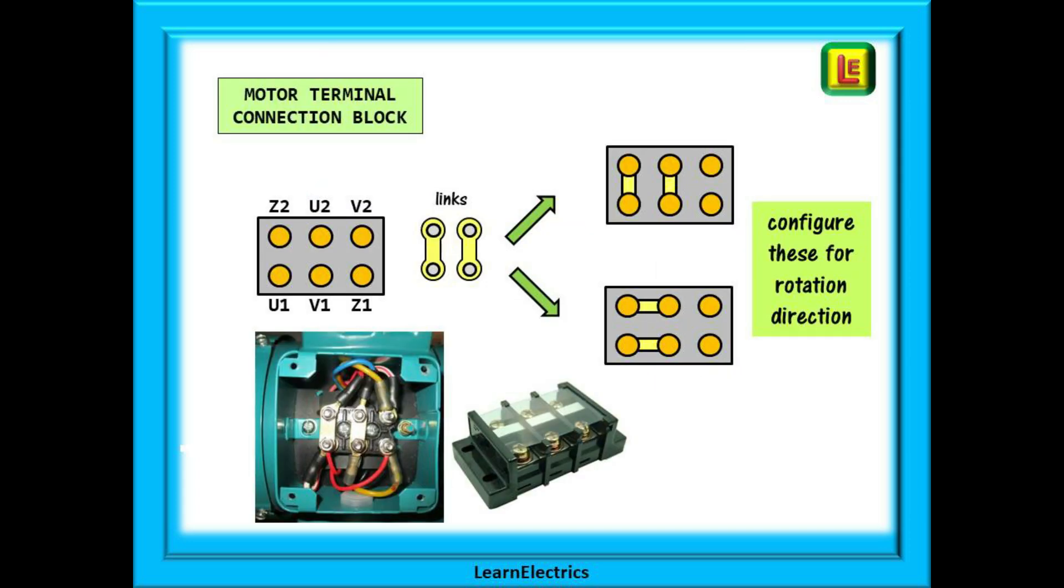If we take the terminal cover off the motor what will we find? Inside is a six post terminal block and some brass links. The way that these links are configured will determine in which direction the motor spins and we will cover this shortly. The incoming supply is also connected to these terminal posts and on our drawings we have left the earth off for clarity.